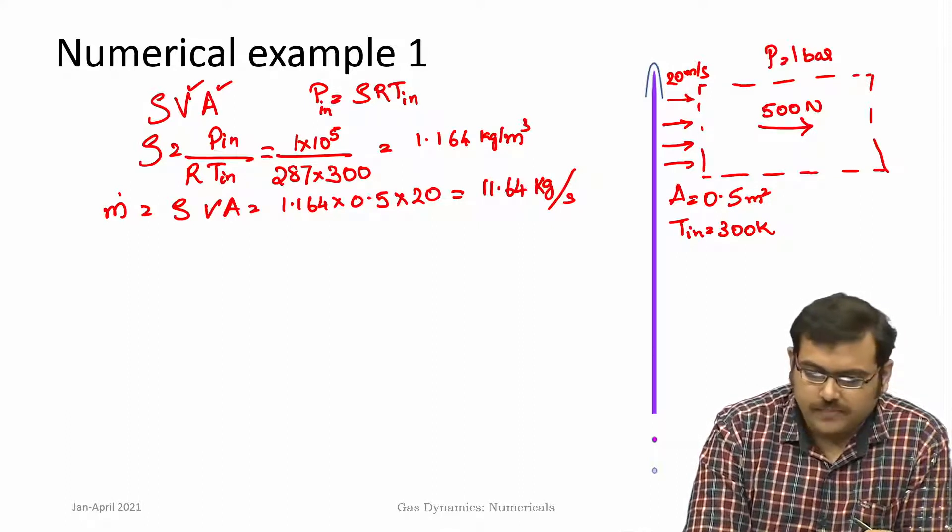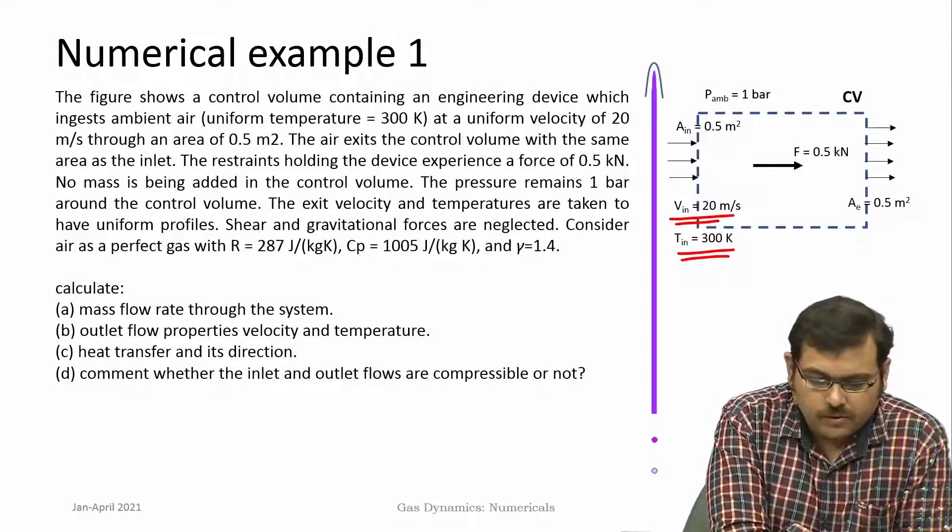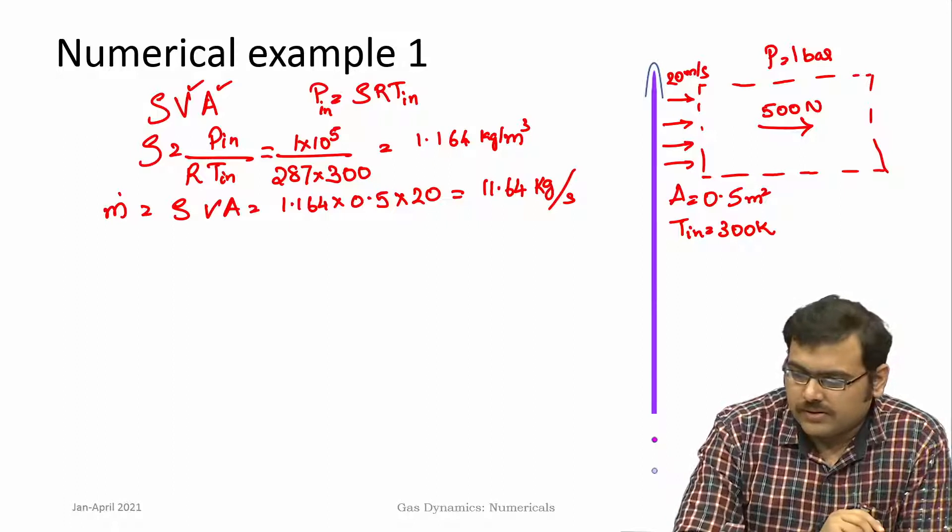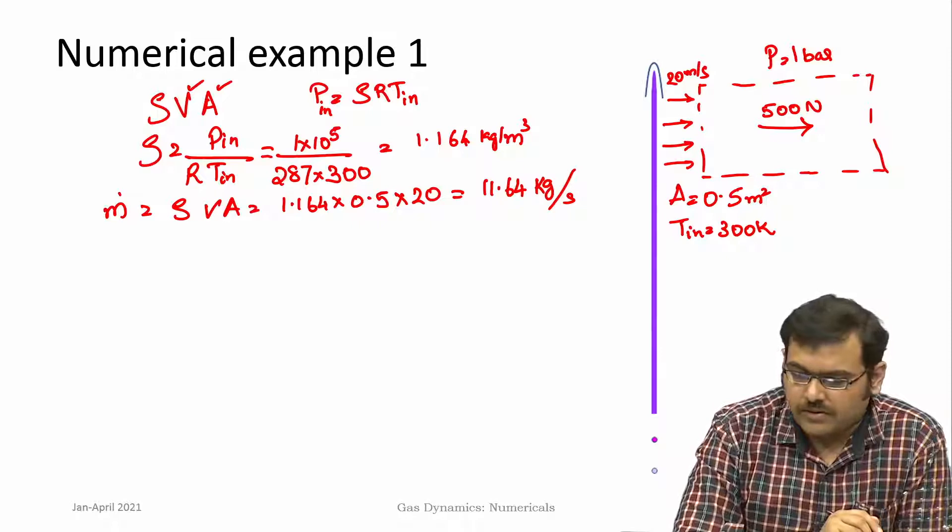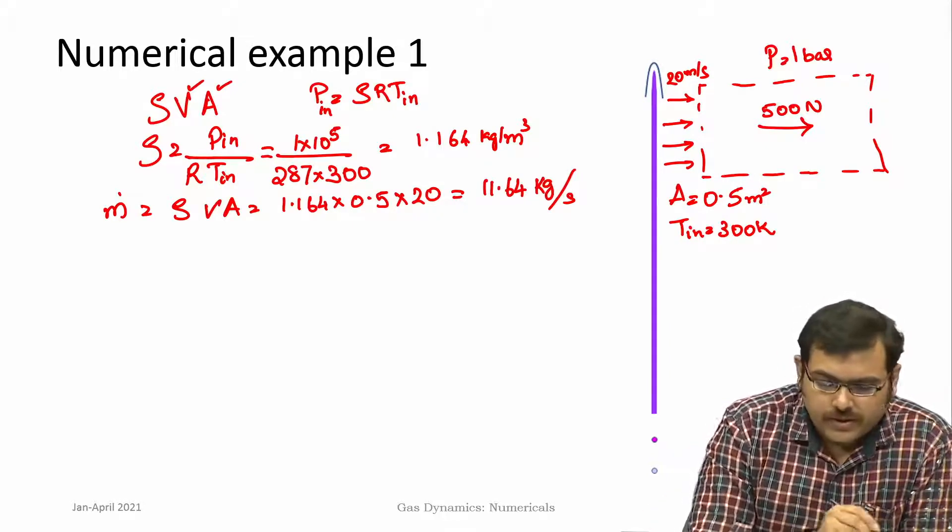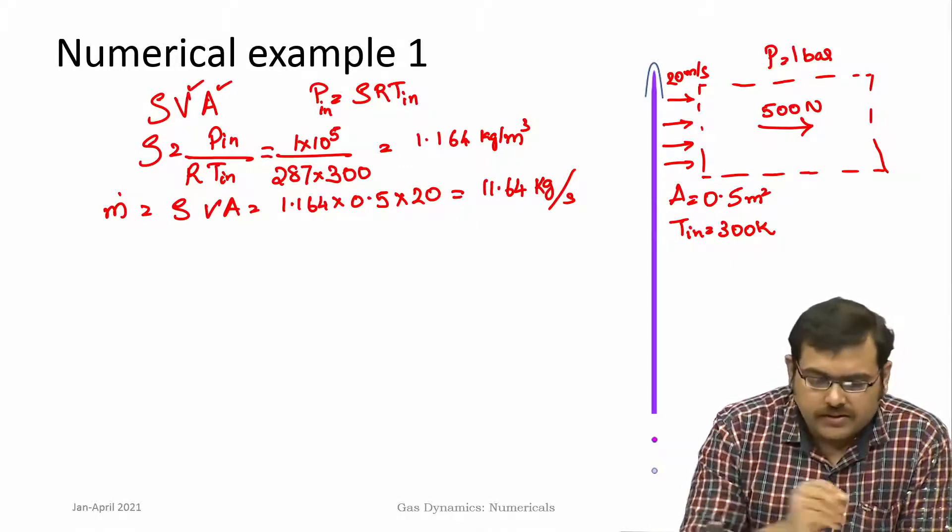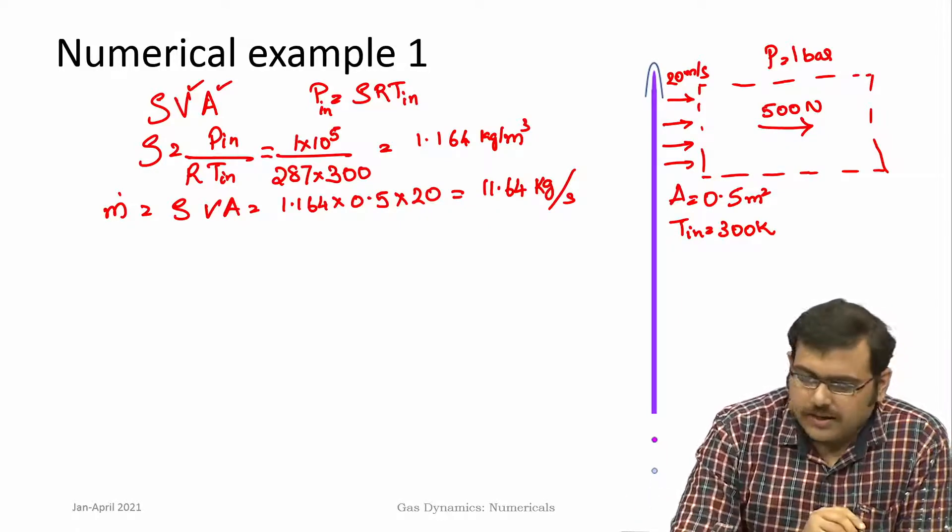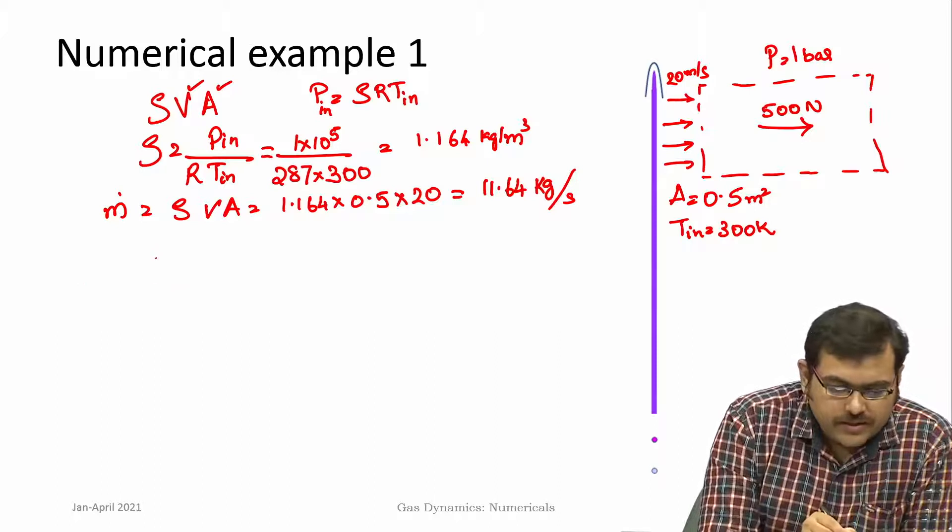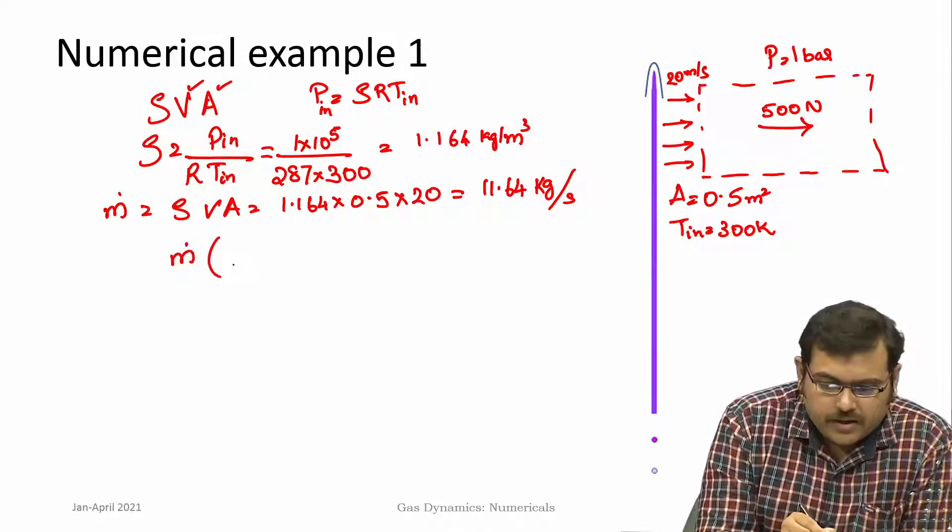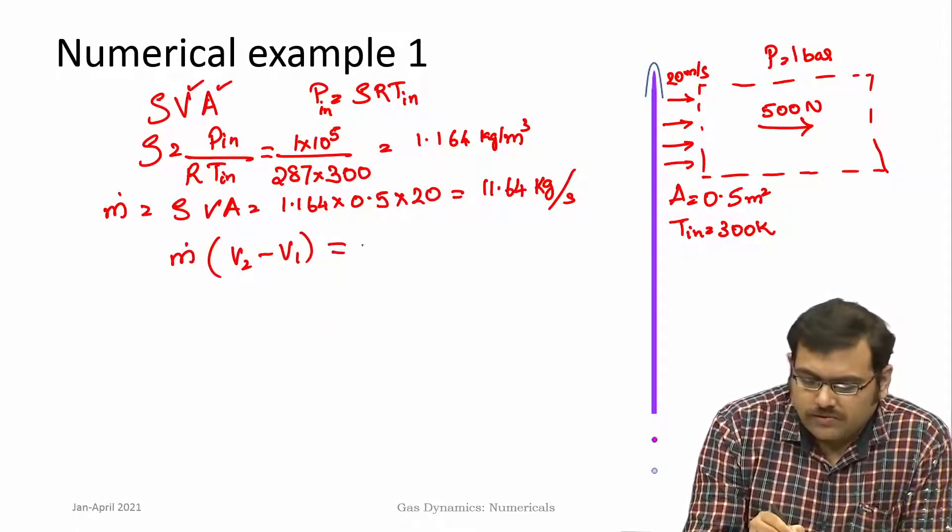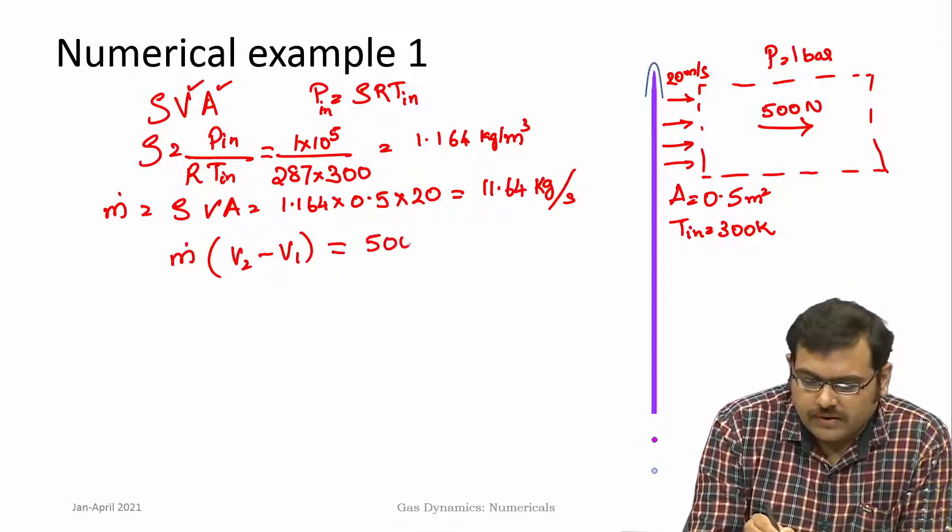Now the question is what is the outlet flow properties velocity and temperature. Let us go to the outlet and we know that there is a force getting applied which is 500 Newtons. Mass flow rate through the system remains the same, the pressure is also the same, and the area is remaining the same across from beginning to the end. If you look at the momentum conservation equation, that is the principle that we have to use here, which says M dot multiplied by V_2 minus V_1 should be equal to the force applied, that is 500 Newton.